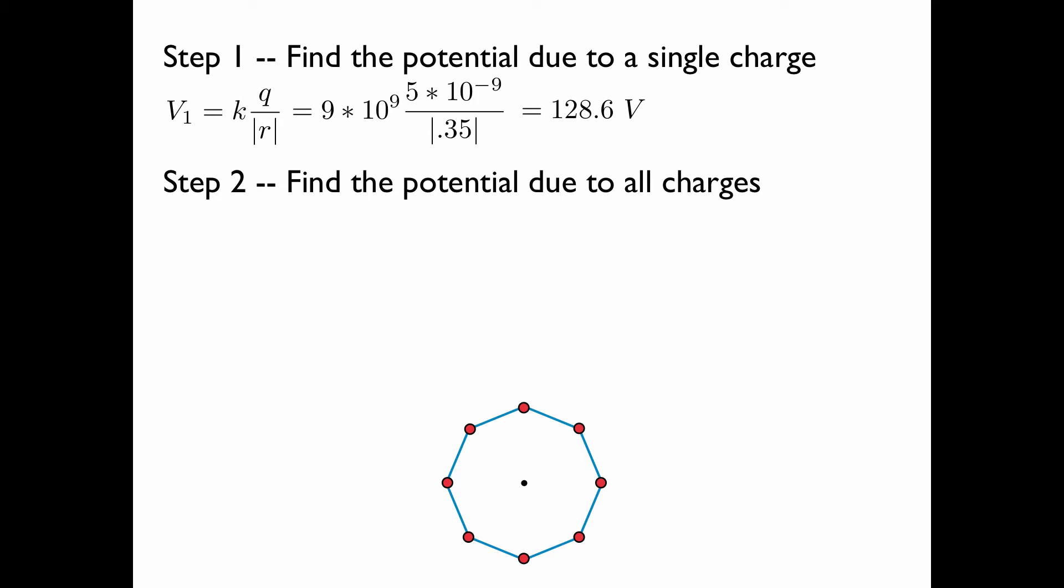Step 2 is to find the potential due to all charges. This is simply 8 times the potential due to one charge, because they're all positive quantities, and they add at the center to give a total potential of 1029 volts.